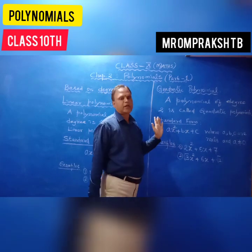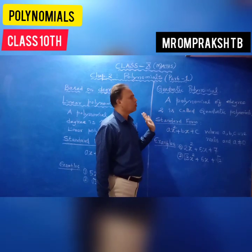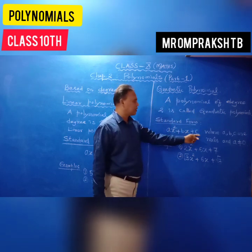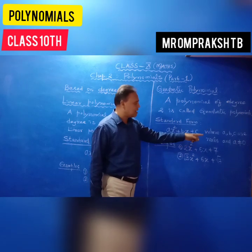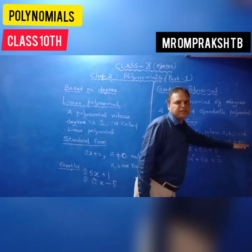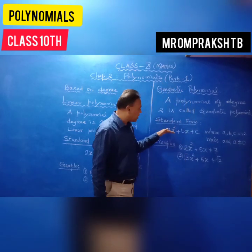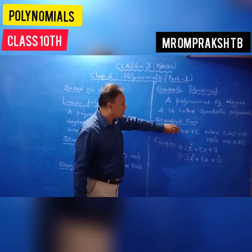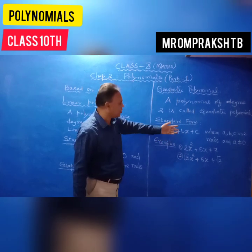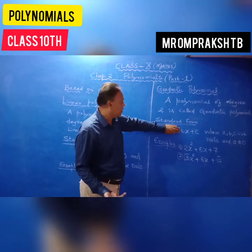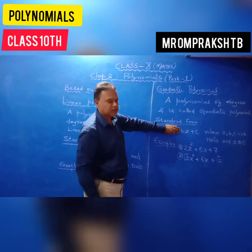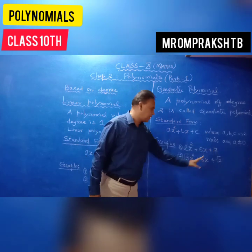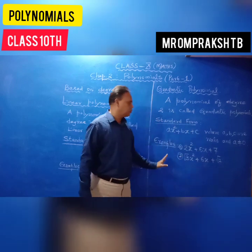A quadratic polynomial is a polynomial of degree 2. Its standard form is ax squared plus bx plus c, where a, b, c are real numbers and a is not equal to 0. The condition a not equal to 0 is very important — if a equals 0, you will not get the x squared term, and it becomes a linear polynomial. Examples: 2x squared plus 5x plus 7, and 3x squared plus 6x plus root 2.